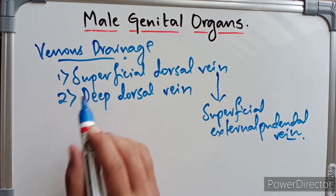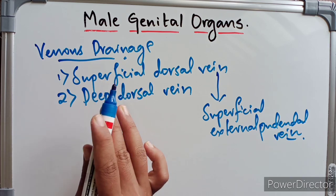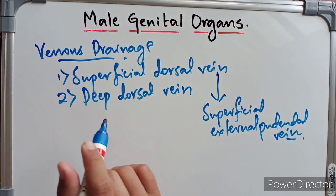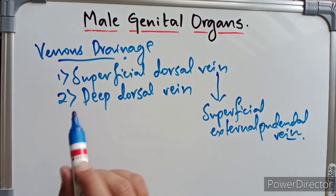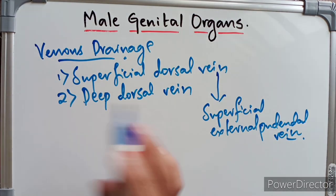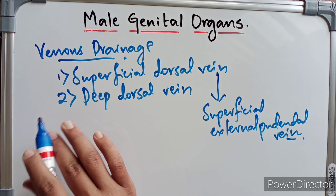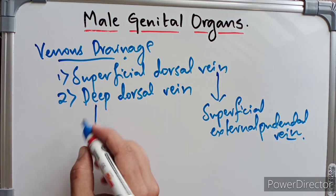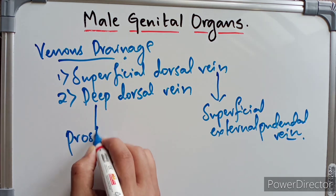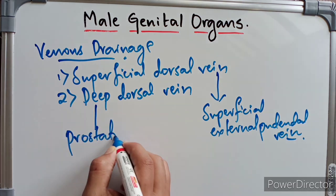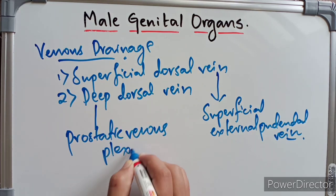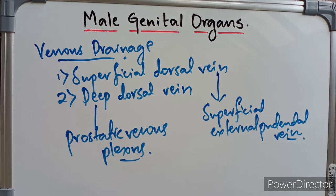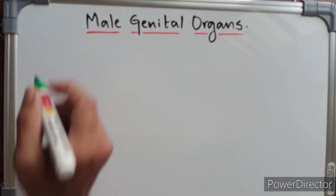The deep dorsal vein lies in the deep fascia, called Buck's fascia, in the median plane on the dorsal aspect along the two corpora cavernosa. The deep vein drains the venous blood from the cavernous tissue and passes into the prostatic venous plexus.